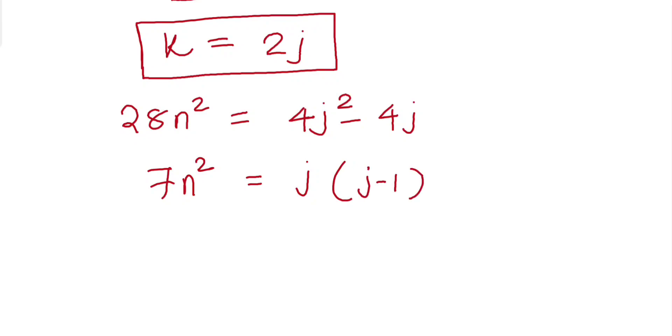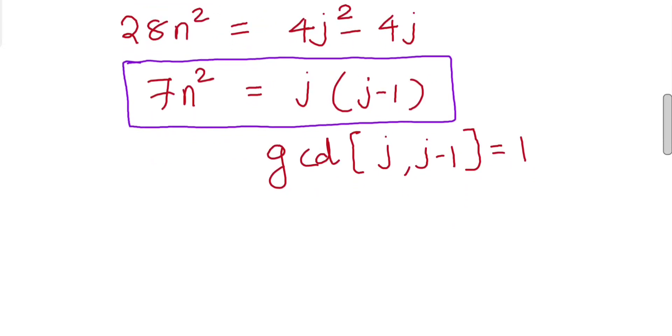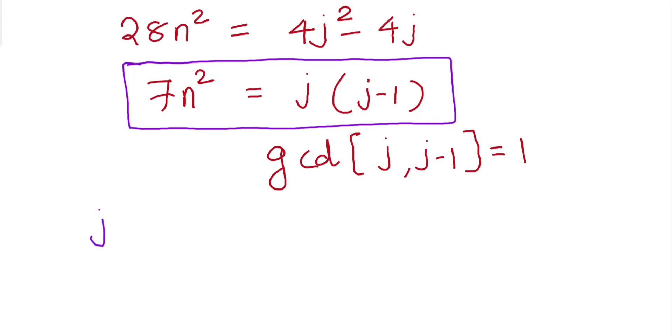Now note that gcd of j and j - 1 is 1. From this equation, j = 7x² for some x and j - 1 = y² for some y, or we can say j = y² and j - 1 = 7x². Both possibilities are there, so this is our case 1 and this is our case 2.